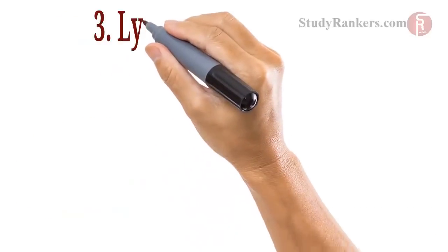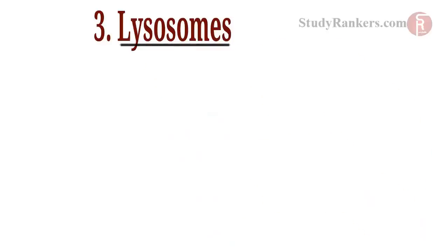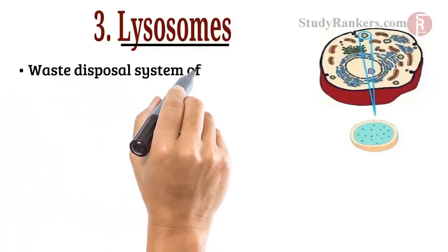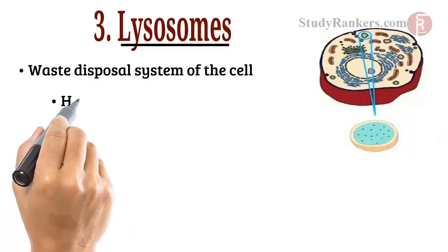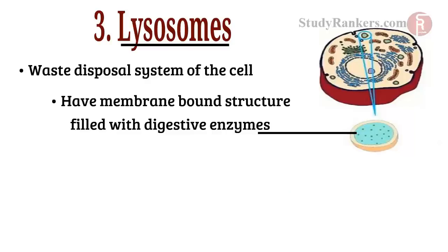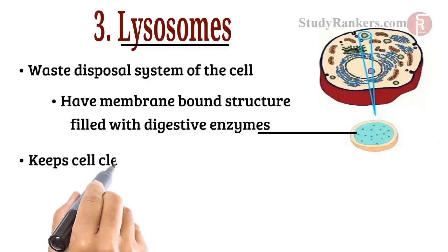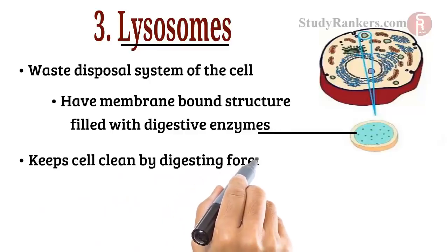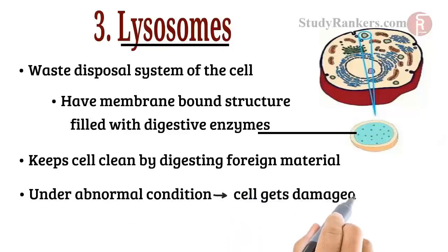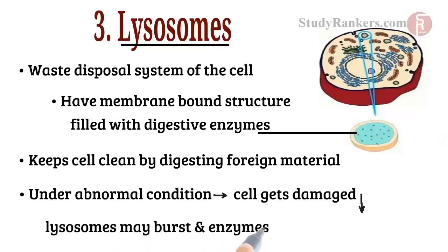The next cell organelle is lysosomes. Lysosomes are a kind of waste dispatch and disposal system of the cell. They have membrane-bounded structures whose sacs are filled with digestive enzymes. They help to keep the cell clean by digesting any foreign material as well as worn-out cell organelles. Under abnormal conditions, when the cell gets damaged, lysosomes may burst and the enzymes digest their own cell. Therefore, they are also known as suicide bags.